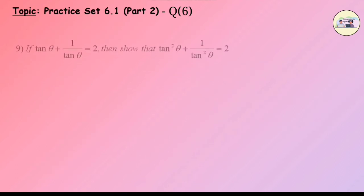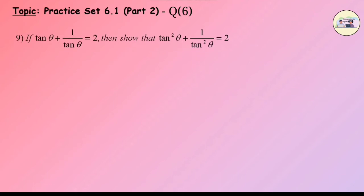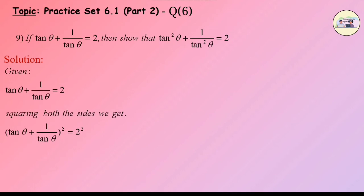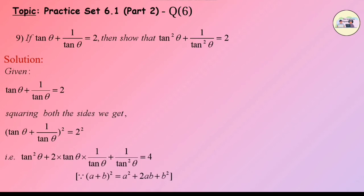Sub Question 9: If tanθ + 1/tanθ = 2, then show that tan²θ + 1/tan²θ = 2. Given tanθ + 1/tanθ = 2, squaring both sides we get (tanθ + 1/tanθ)² = 4, that is tan²θ + 2·tanθ·(1/tanθ) + 1/tan²θ = 4.